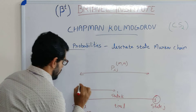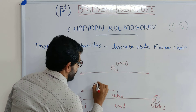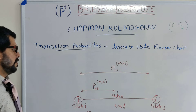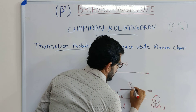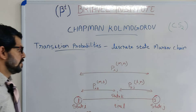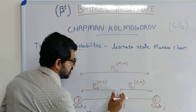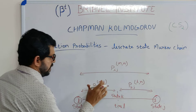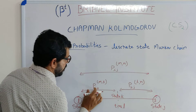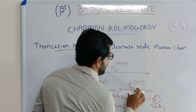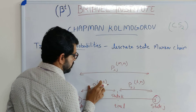There are two probabilities involved. The probability from Ith state to Kth state is written as P(I,K; m,L), and the probability from Kth state to Jth state is written as P(K,J; L,n). By multiplying these two probabilities together we obtain the full transition probability from I to J.